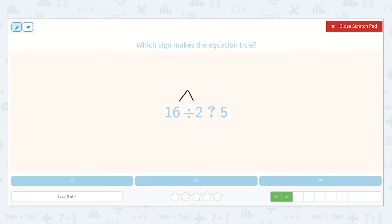Here we have 16 divided by 2, and then we have 5. So half of 16, what is half of 16? Because we're dividing it in half. We're dividing it by 2. Yeah, 8.